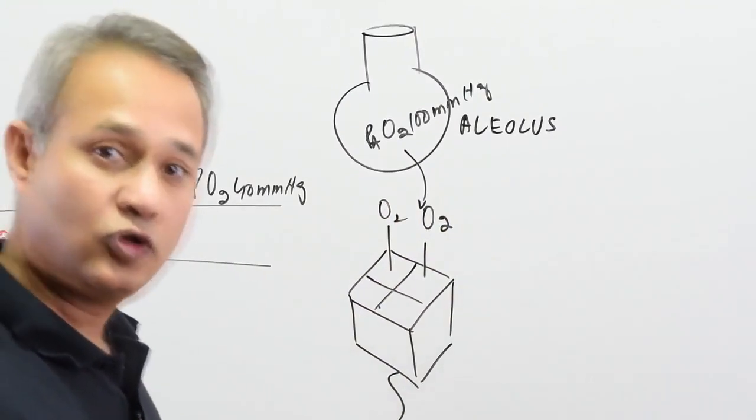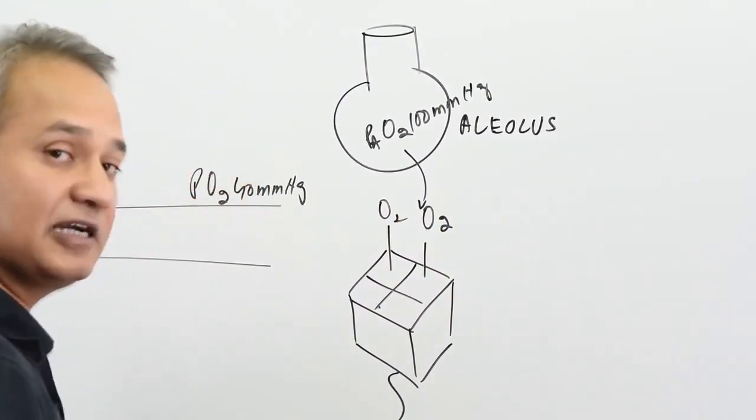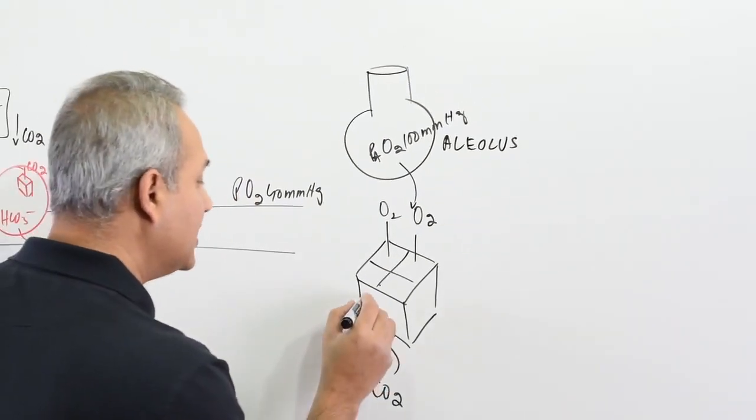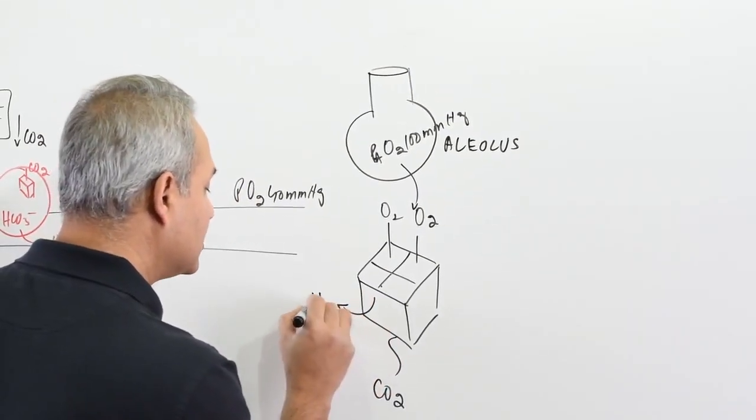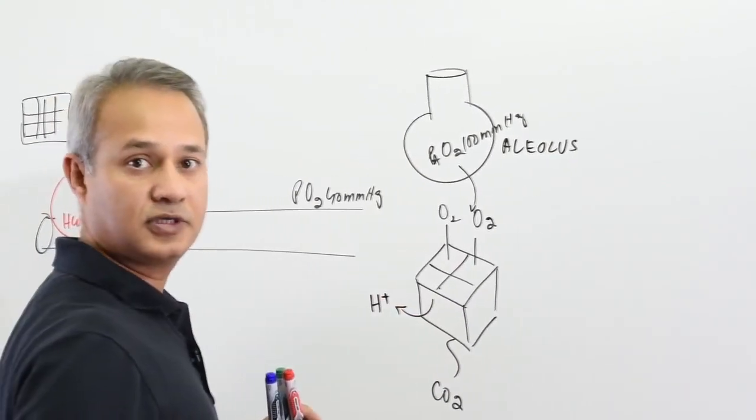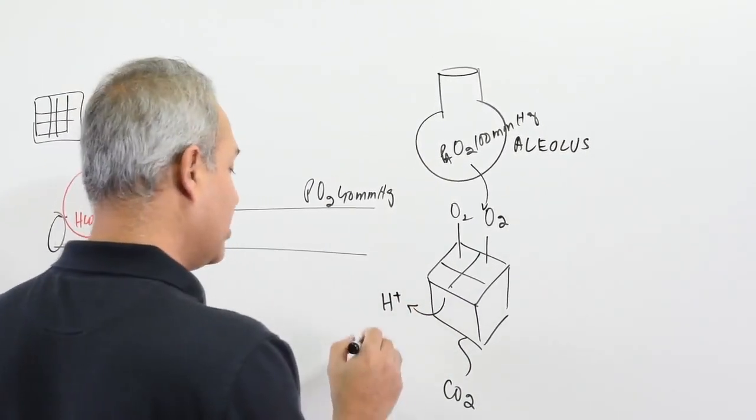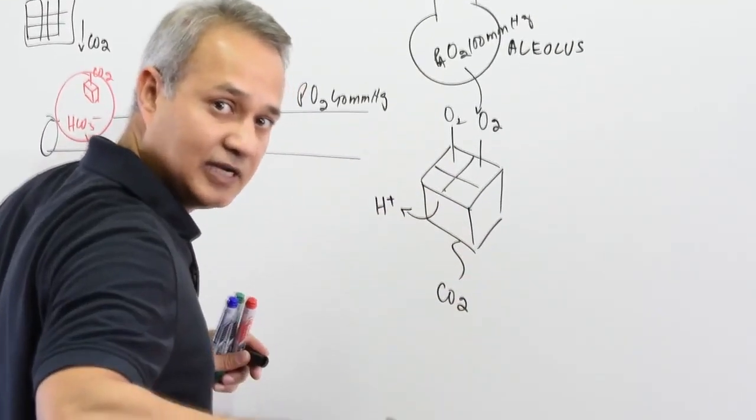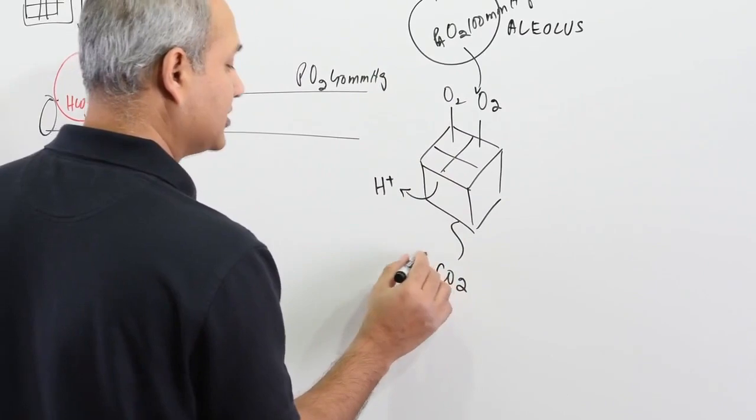Now when the oxygen loads on the hemoglobin, what happens is there is a conformational change in hemoglobin. Hemoglobin becomes acidic and it releases hydrogen ion. This hydrogen ion then favors—because acidity has become reduced—it favors the release of carbon dioxide.